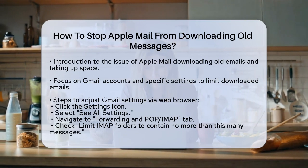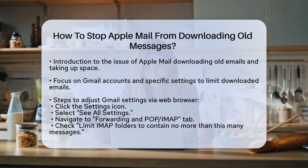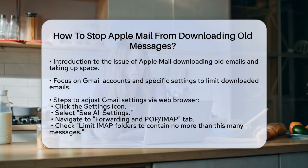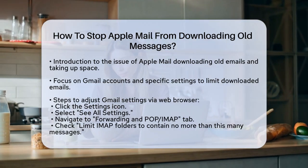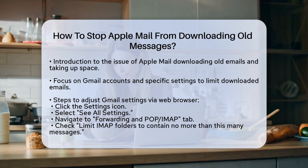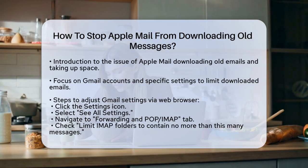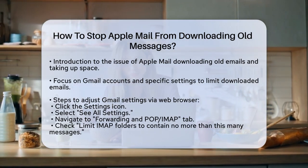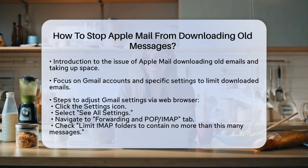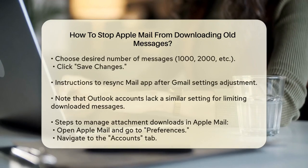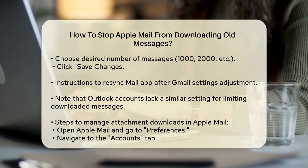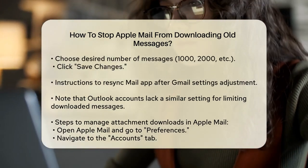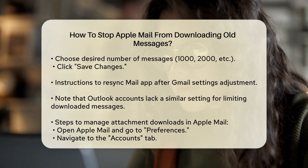Here's what you do. Click the Settings icon in the upper right corner. Select See All Settings. Go to the Forwarding and POP/IMAP tab. Look for Folder Size Limits and check the box that says Limit IMAP Folders to Contain No More Than This Many Messages. Choose the number of messages you want, such as 1,000, 2,000, or 5,000. Click Save Changes.